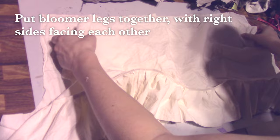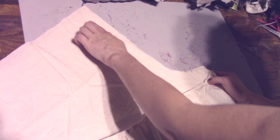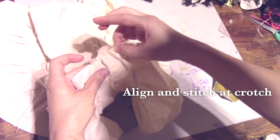After attaching each leg ruffle, I put the bloomer pieces together, right sides facing, and stitch the front and back seams. After that, keeping the right sides together, line up the front and back seams of the crotch so that you can stitch across that inseam part.